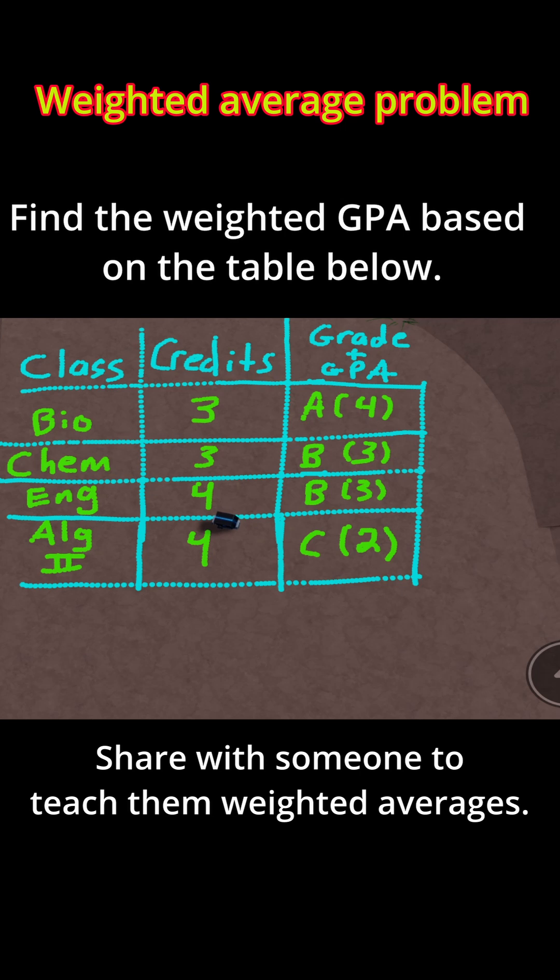They were three credits, three credits, four credits, and four credits. The grades were an A in Bio, a B in Chem, a B in English, and a C in Algebra 2, which corresponds to GPAs of 4, 3, 3, and 2, respectively.